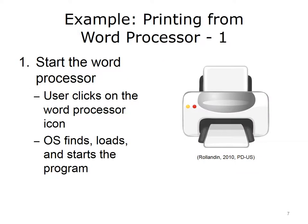Here is an example of how an OS works and what it does. Suppose you want to print a document from a word processor. First, you start a word processing program by clicking on the desktop icon for that program. The OS registers the mouse click and knows that you want to open the word processor. It finds where that program is stored on the hard drive, loads it into memory, and starts the program.